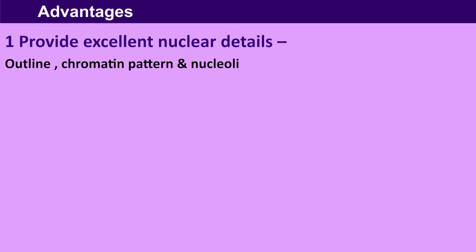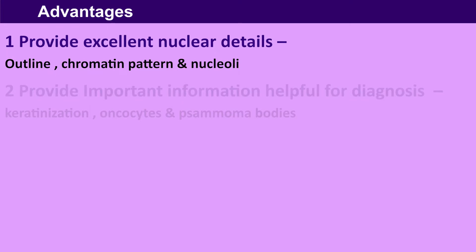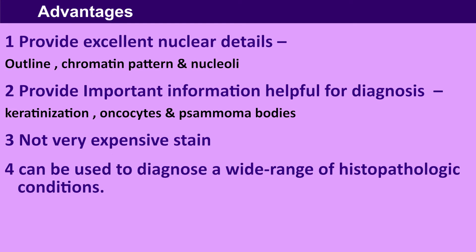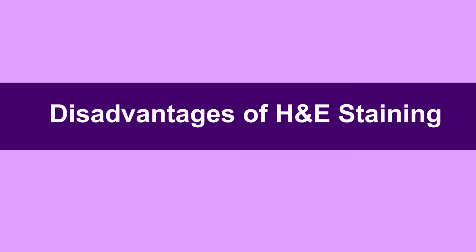Advantages of hematoxylin and eosin staining: it provides excellent nuclear details such as outline, chromatin pattern, and nucleoli. It provides important information helpful for diagnosis, such as keratinization, oncocytes, and plasma cells. It is not a very expensive stain and can be used to diagnose a wide range of histopathological conditions.